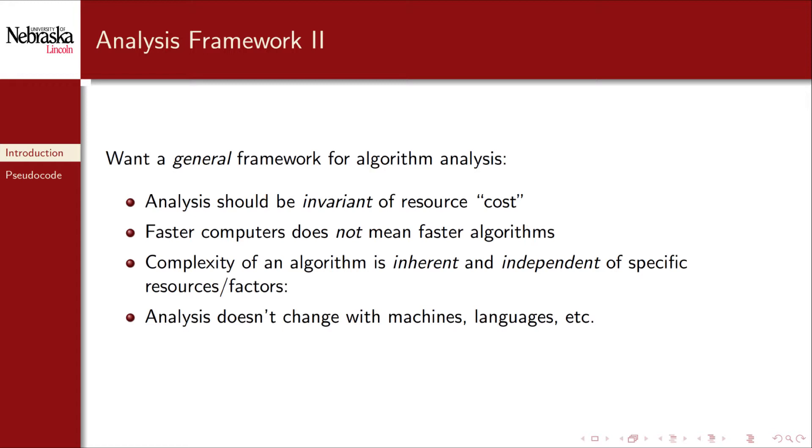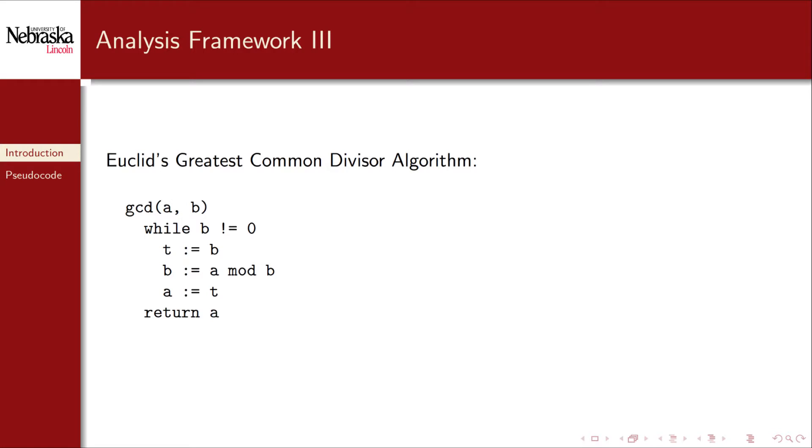We could always upgrade our hardware or switch languages or any number of other changes could be made but the algorithm would still stay the same. A quintessential example of this is one of the oldest algorithms, Euclid's greatest common divisor algorithm. This algorithm is over 2300 years old far before the advent of the modern computer. It takes just as many operations and steps to execute Euclid's GCD algorithm today as it did over 2000 years ago. Implementing and running this algorithm on a modern computer just means that the individual steps are faster not that the algorithm itself is any faster.